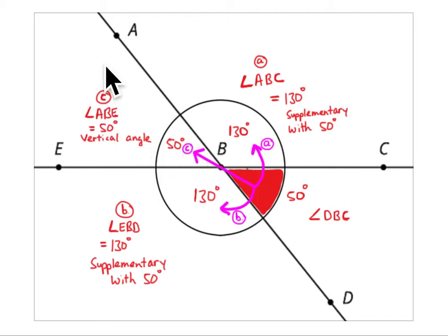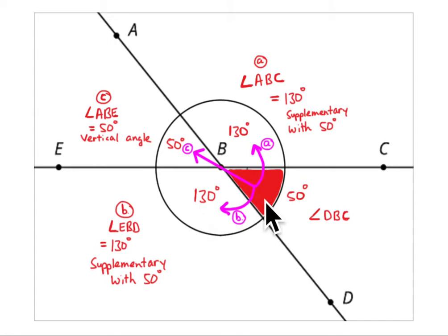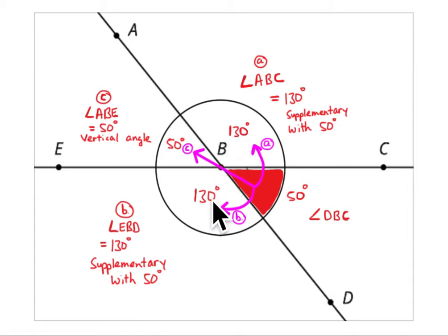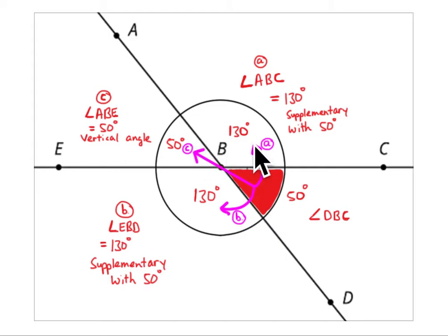Angle EBD is also supplementary to the 50 degree angle, so it also has to be 130 degrees. Another way to check is that it is a vertical angle — going across the intersection, this angle is 130 degrees. The last angle, ABE, is a vertical angle to the first angle and equals 50 degrees. It's also supplementary to the other two angles, so there are several ways to figure it out: vertical angles and supplementary angles.